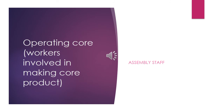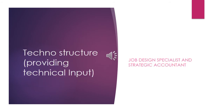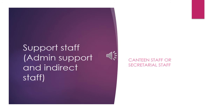In the operating core we have workers involved in making core products — the assembly staff assembling the laptops. The job design specialists and strategic accountant form part of the techno structure block, because they provide technical input and help standardize company operations by providing guidelines, techniques, and ways of cutting costs.